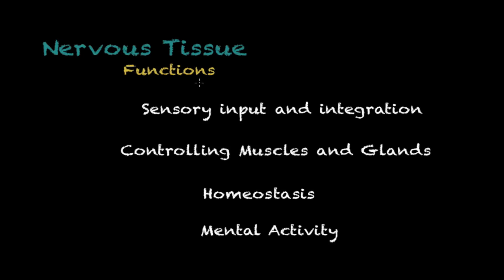We're going to briefly discuss the functions of nervous tissue. I have four main ones here, though of course you could find a couple more. The main ones are: sensory input and integration, controlling muscles and glands, homeostasis, and mental activity.